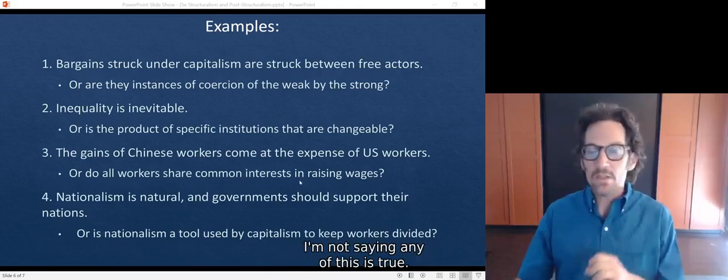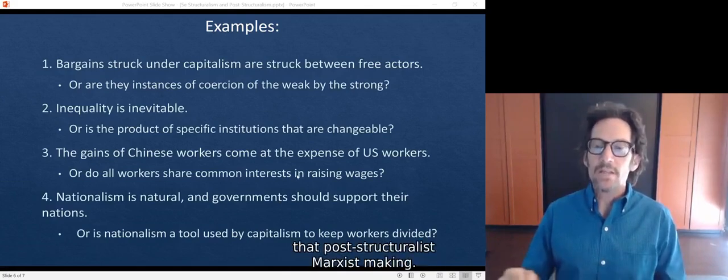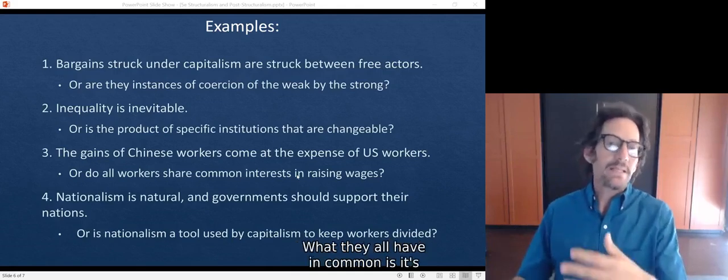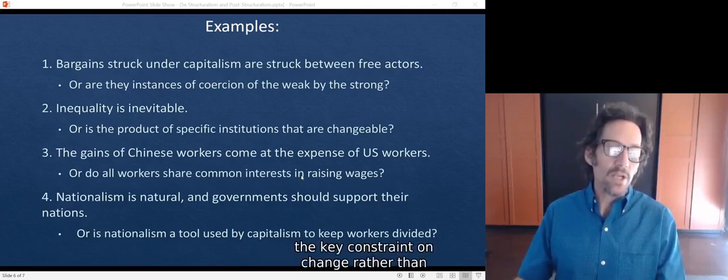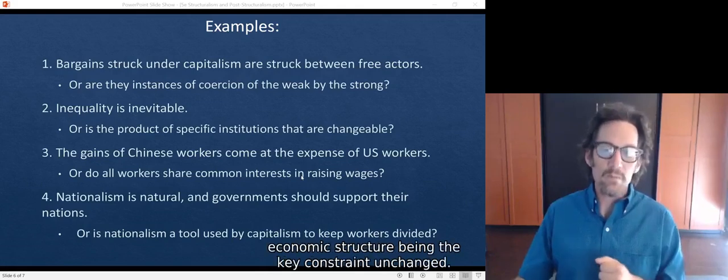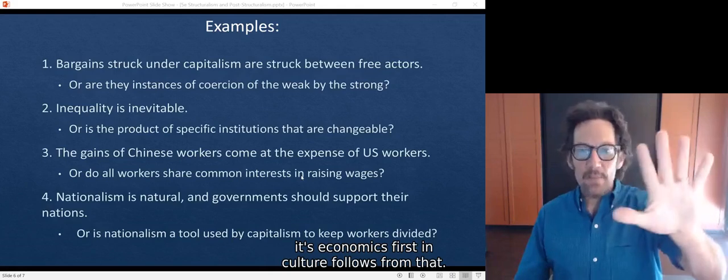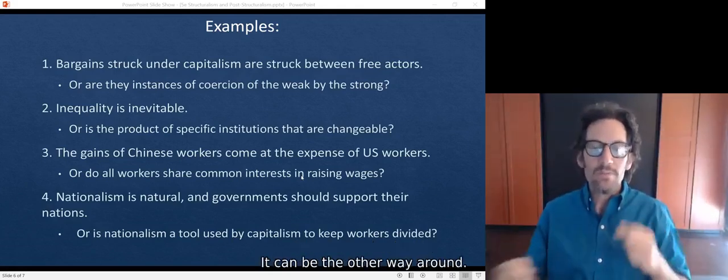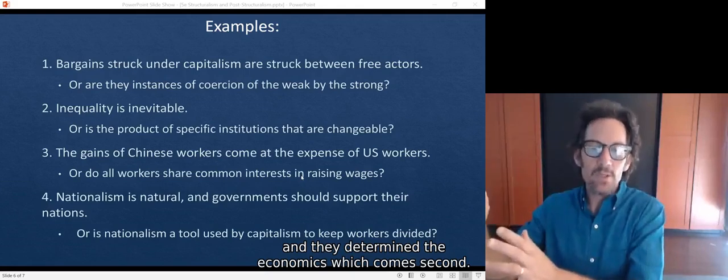I'm not saying any of this is true. I'm saying these are the arguments, the kinds of arguments that post-structuralist Marxists make. And what they all have in common is it's about shared ideas really being the key constraint on change rather than economic structure being the key constraint on change. So to put it slightly differently for traditional Marxism, it's economics first and culture follows from that. And in post-structural Marxism, it can be the other way around. It's these ideas that come first and they determine the economics, which comes second.